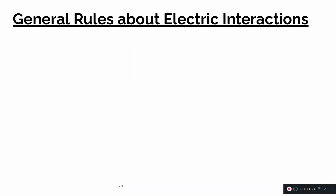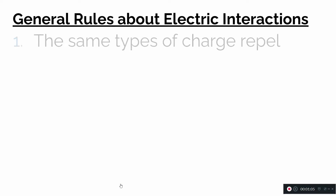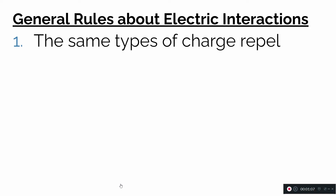When we look at general rules, all of your interactions should have fallen under one of these four categories. Number one: the same types of charge repel. If you had a top tape and a top tape, or a bottom tape and a bottom tape, they should have repelled one another.